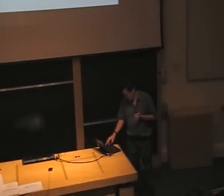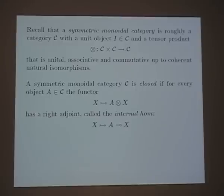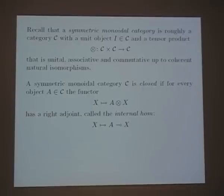This notion of duality is captured by the concept of a star-autonomous category. A symmetric monoidal category is roughly a category with a tensor product and a unit for the tensor product — for example, finite-dimensional vector spaces with the usual tensor product, where the ground field (say the complex numbers) is the unit. A symmetric monoidal category is called closed if, for every object A, the functor of tensoring by A has a right adjoint, called the internal hom.